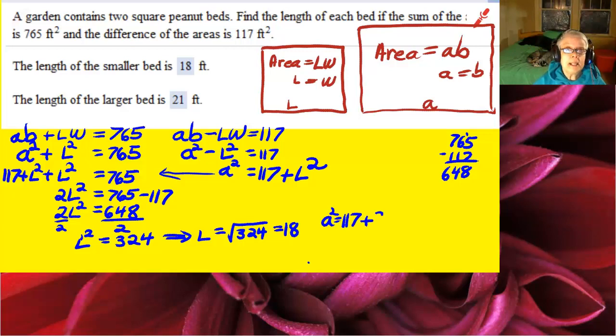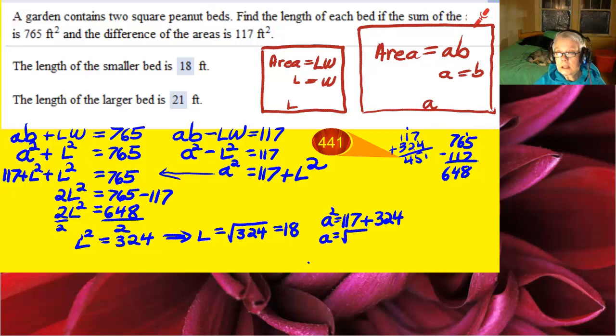Now, let's find out what A is. We already know that A squared equals 117 plus L squared, and that L squared equals 324. 117 plus 324 equals 441.